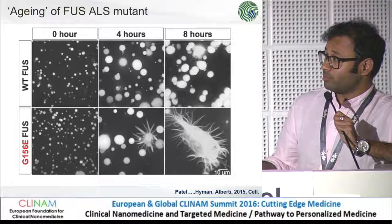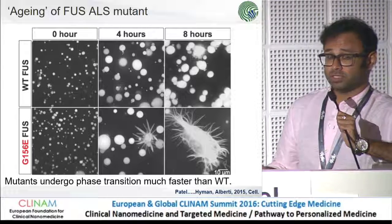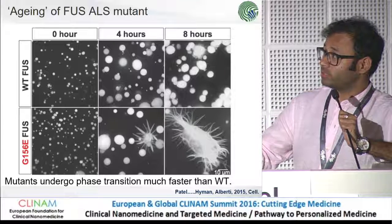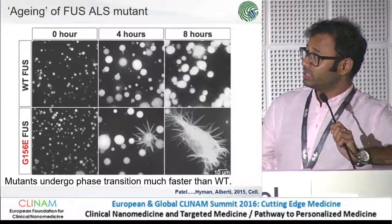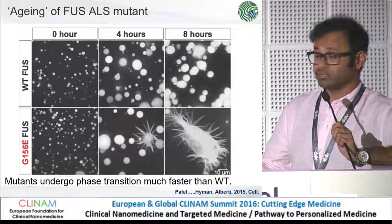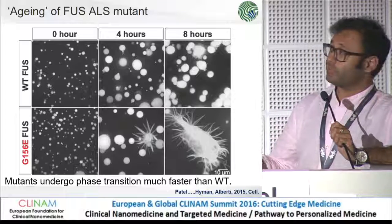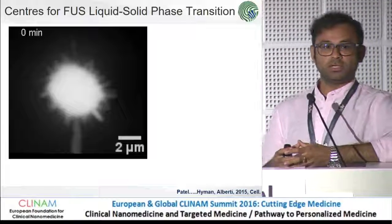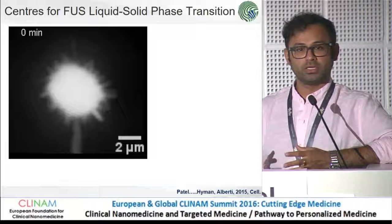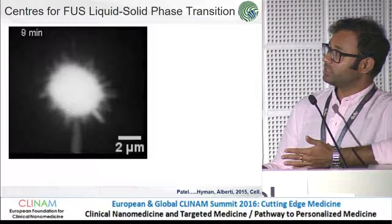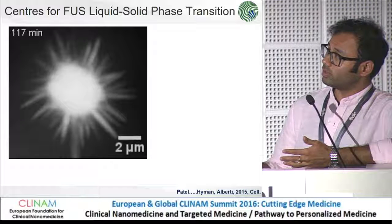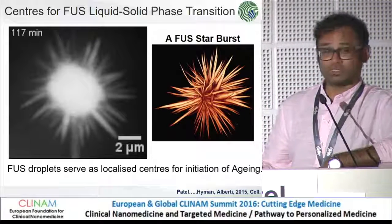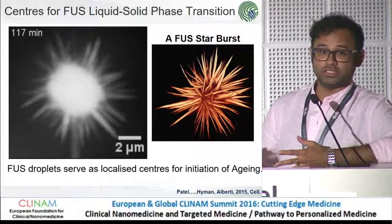The conclusion from this and several other experiments is that the mutants make the liquid-to-solid phase transition much, much faster than you would expect from the wild-type protein. The wild-type protein also ages and becomes this, but only after 24 hours — a very, very long time. When we looked at individual droplets over time, we saw fibers growing out from the droplet, which then converts into something like a starburst — meaning the droplet serves as a localized center for the initiation of fiber formation.